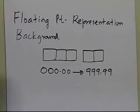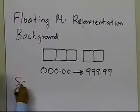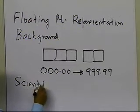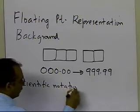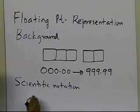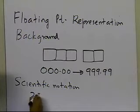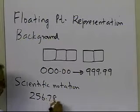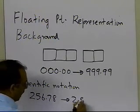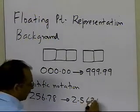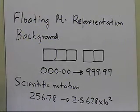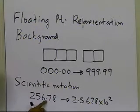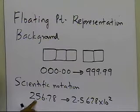So in that case, I would like to introduce you to the scientific notation. The scientific notation, which is the floating-point notation, means we modify a number like 256.78 and write it as 2.5678 times 10 to the power 2. That's what the floating point is, because you have floated this decimal point all the way to after the 2.